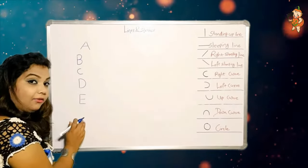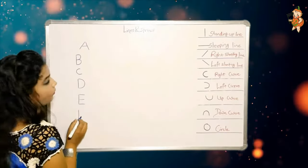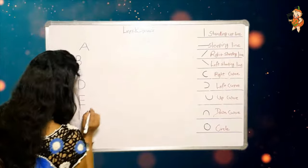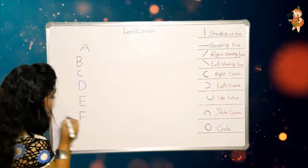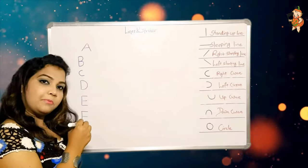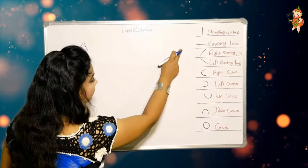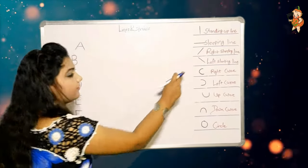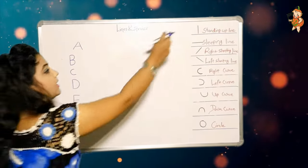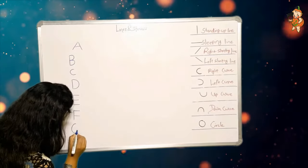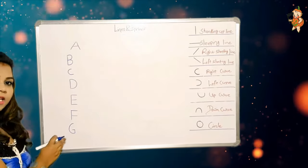How to make F? One standing up line, one standing up line, and another sleeping line. How to make G? One right curve, a small standing up line, and a small sleeping line. It's very simple.